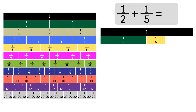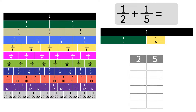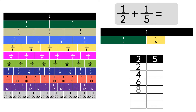To find the common denominator, we're going to use multiples. Let's list the multiples of 2: 2, 4, 6, 8, 10, and so on. Now let's list the multiples of 5: 5, 10. As you can see, both lists have 10, so 10 is our common denominator.